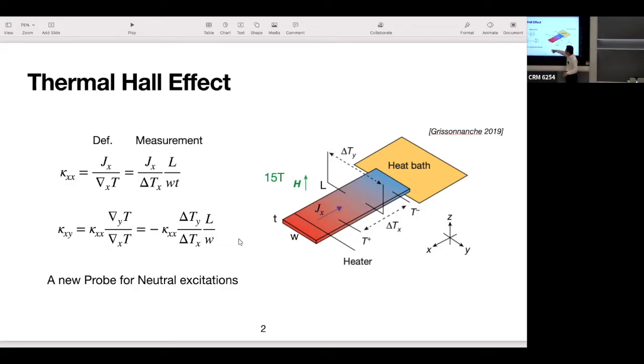In thermal Hall effect, you just replace the electrical current with a heat current. So you heat up this end, the heat current goes in, and then you detect temperature difference in the y-direction.